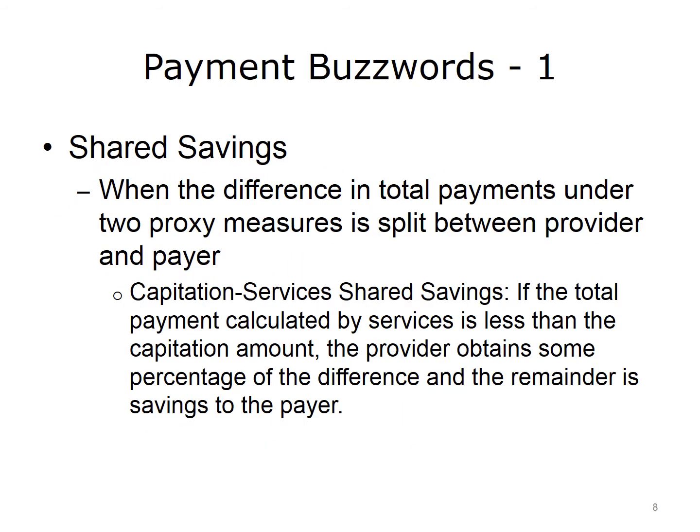There are two payment buzzwords worth knowing: shared savings and pay for performance. In the shared savings model, the difference in total payment under two proxy measures is split between the provider and payer. For example, in a capitation services shared savings model, if the total cost of all services needed is less than the capitation amount, the provider obtains some percentage of the difference, and the remainder is savings to the payer.